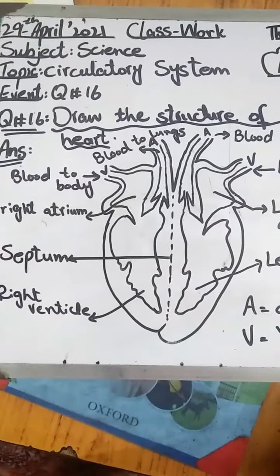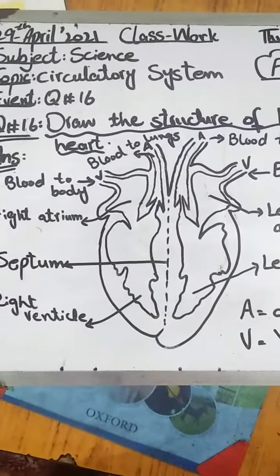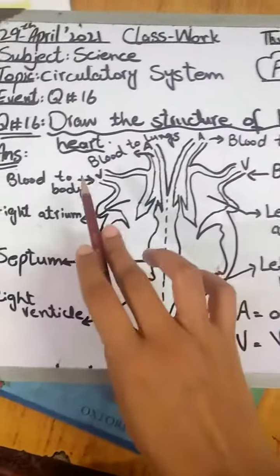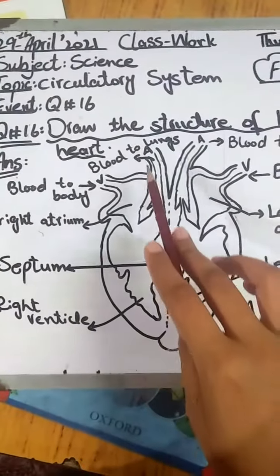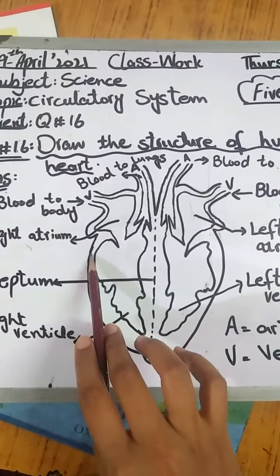Assalamualaikum, Class 5. Today our topic is circulatory system and question number 16 is draw the structure of human heart. So first of all we draw this structure - one side left.